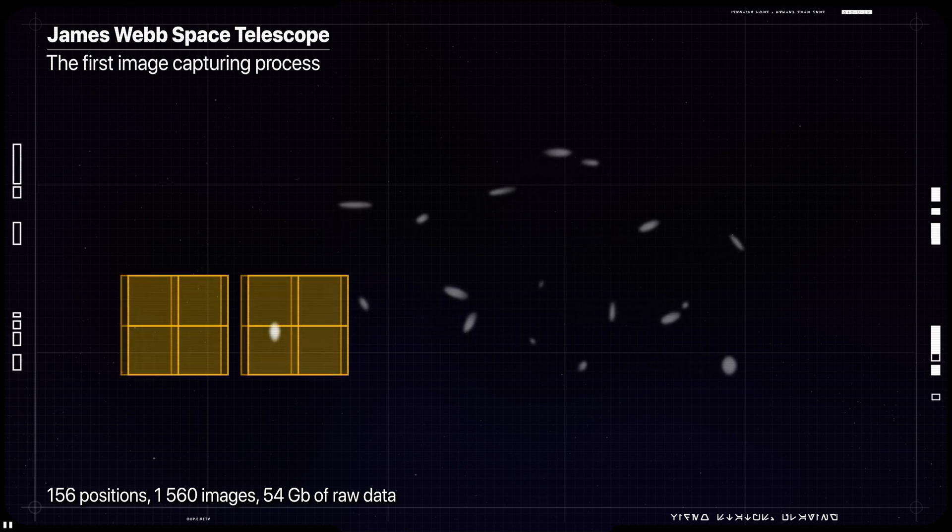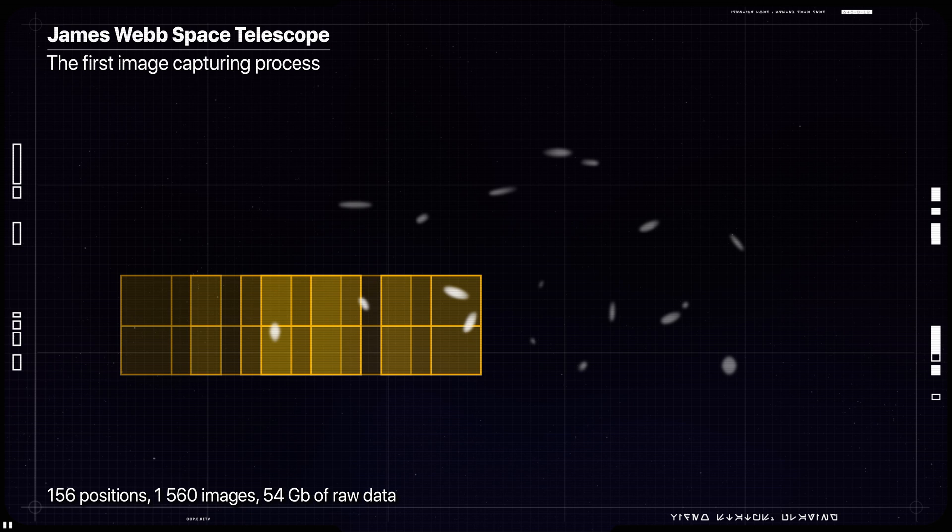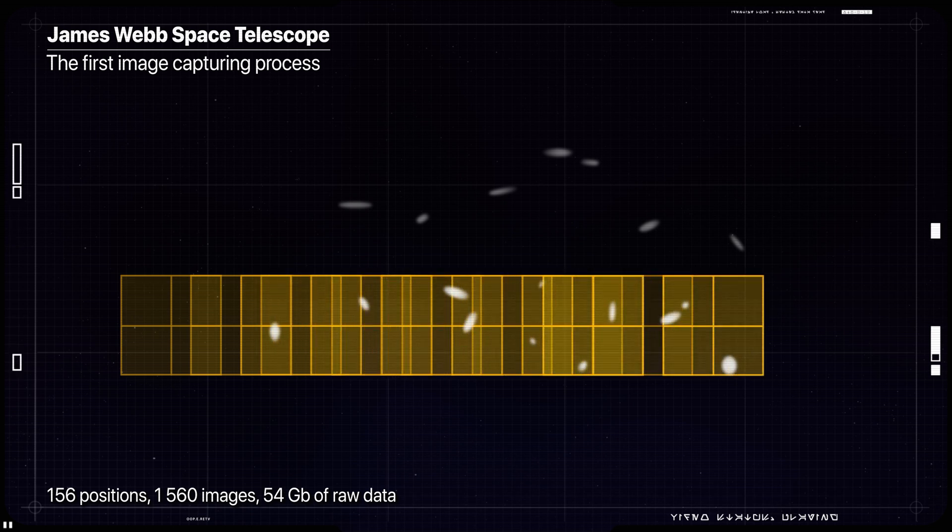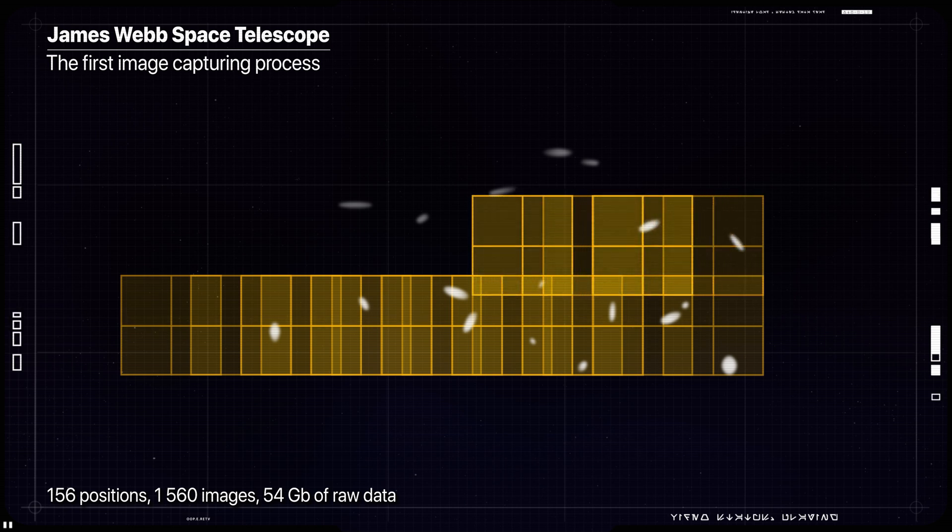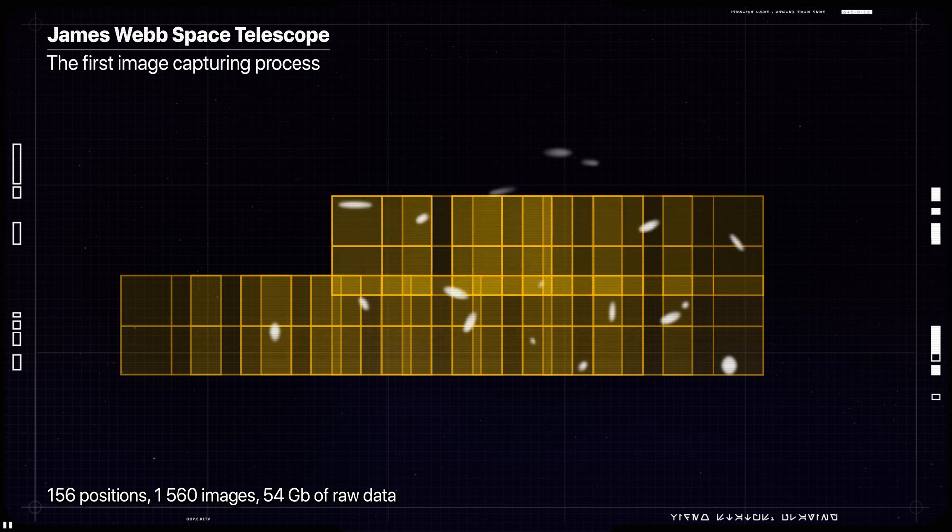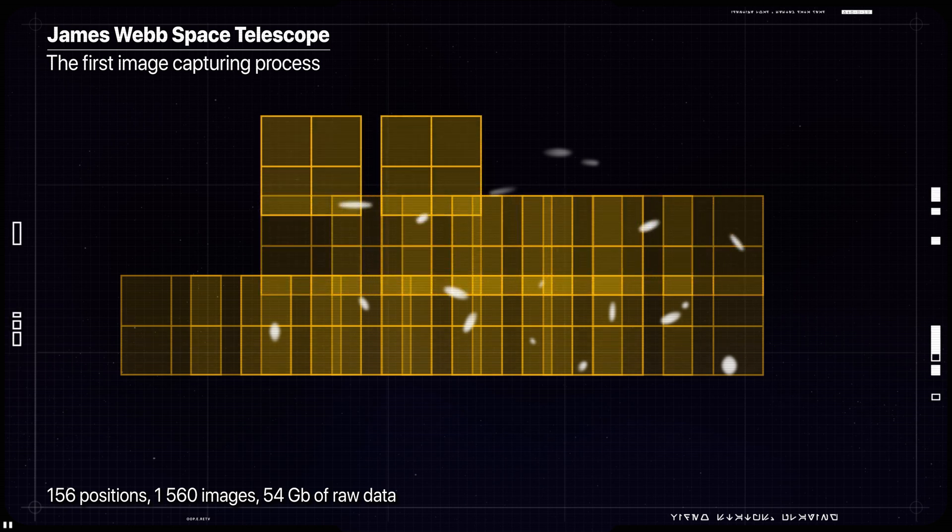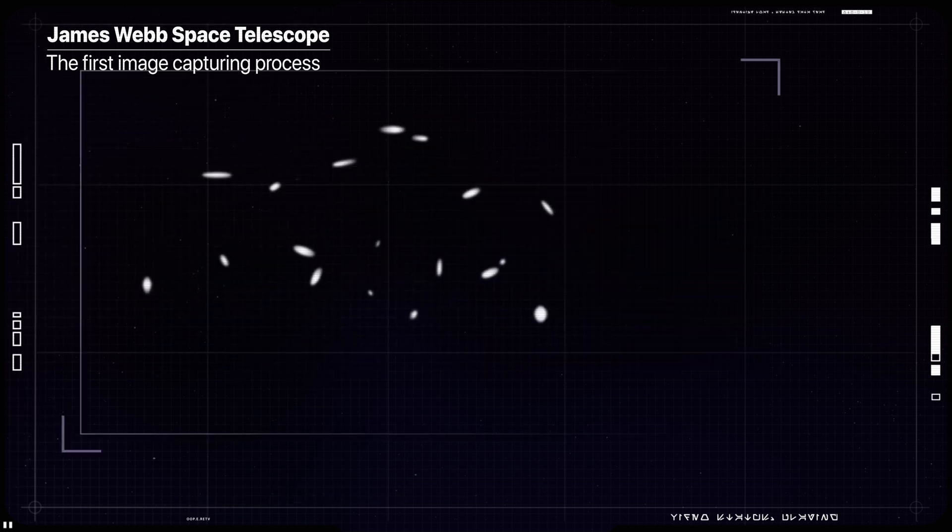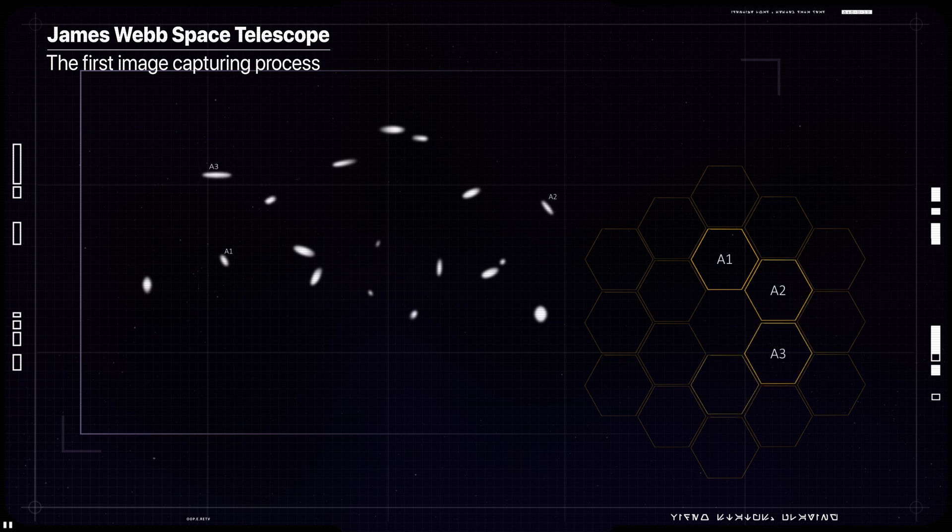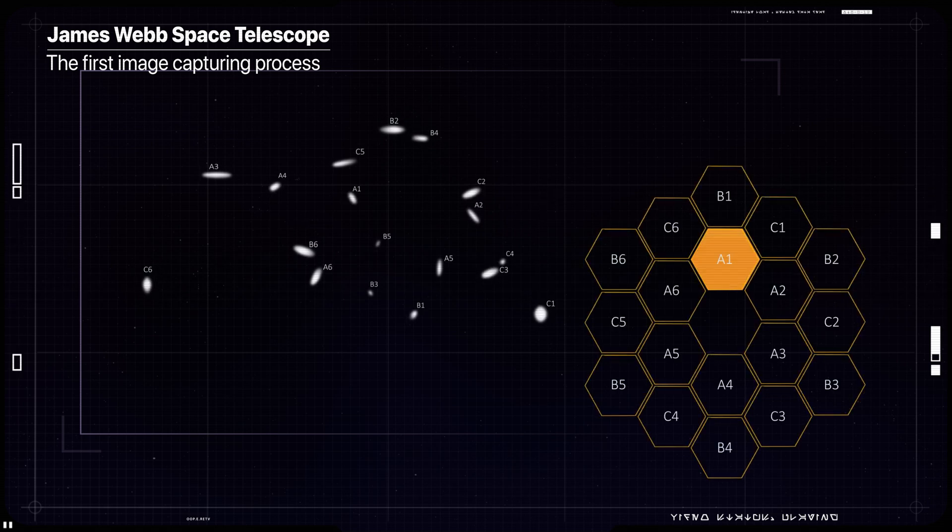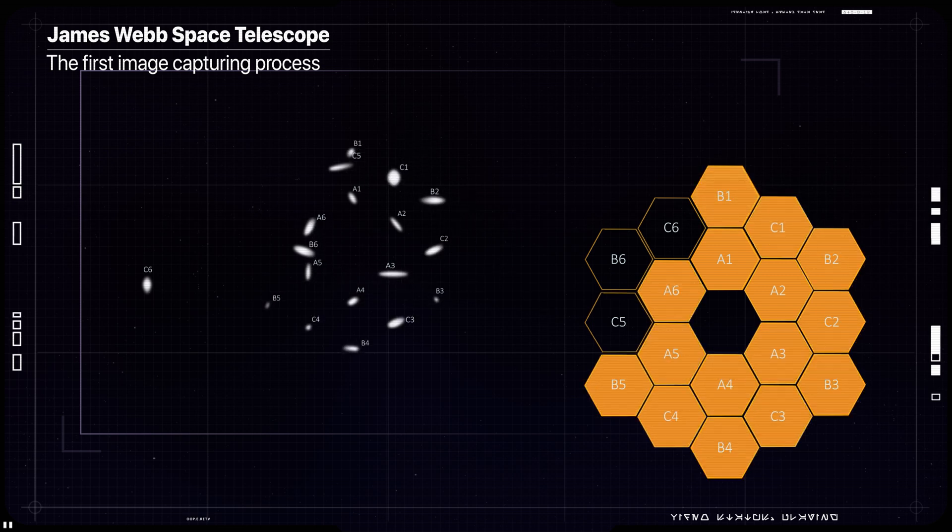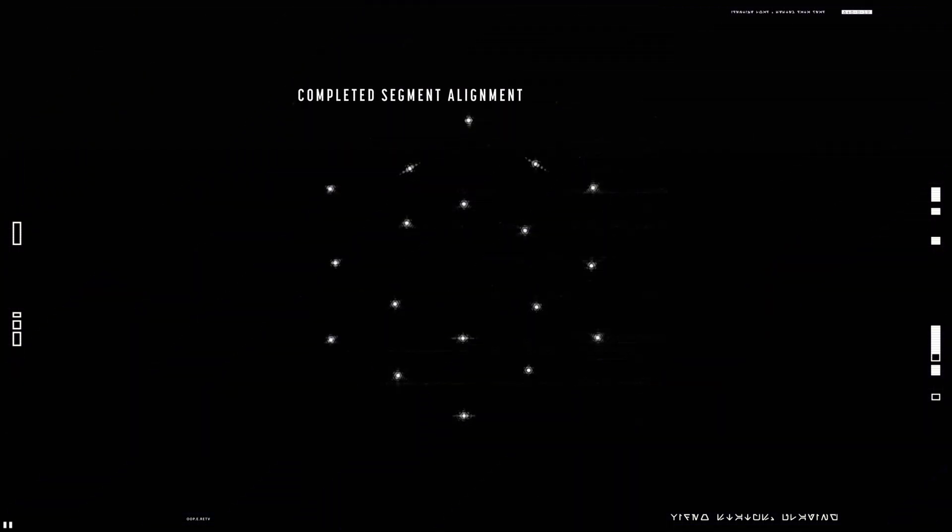The telescope was repointed to 156 different positions around the predicted location of the star and generated 1560 images using near infrared camera stand detectors amounting to 54 gigabytes of raw data. The entire process lasted nearly 25 hours, but notably the observatory was able to locate the target star in each of its mirror segments within the first 6 hours and 16 exposures.